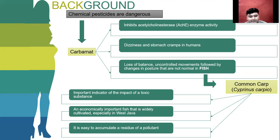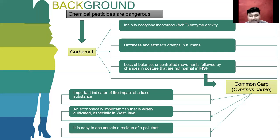In fish, carbamate is characterized by loss of balance and abnormal posture. Goldfish is an important indicator of the impact of toxic substances because it is an economically important fish widely cultivated, especially in West Java. Goldfish can be used as a test fish in toxicity tests. Using insecticide as a toxicant and goldfish as the research organism provides very important information on human health, because if humans consume goldfish that have been exposed to insecticide, it can be considered one of the main sources of insecticide exposure.